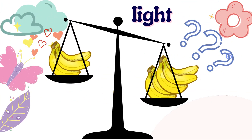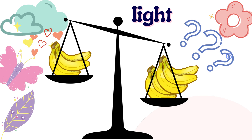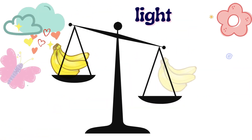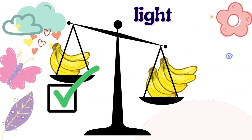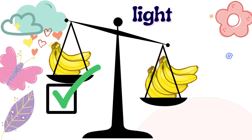Now, on the scale, we have bananas. On the left, we only have three bananas. On the right, we have many bananas. Can you tell — are the bananas on the left light, or the bananas on the right light? Let's check — the bananas on the left are light.